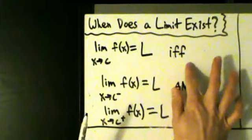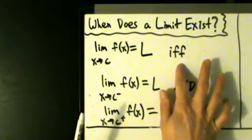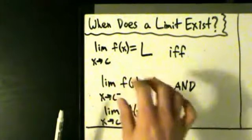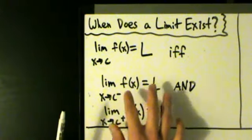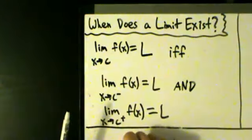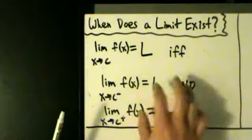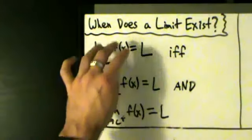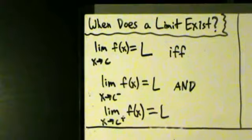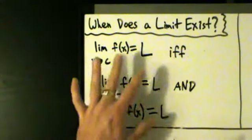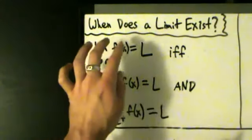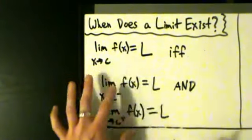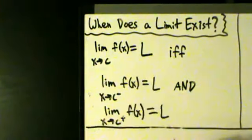So IFF is short for if and only if, and basically it means that whatever you say over here is the exact same thing as saying this. These two things say exactly the same thing, so if one of them is true, then the other must be true as well. You can also use this the other direction: if you know this limit exists and is equal to L, then both of these one-sided limits exist and equal L.